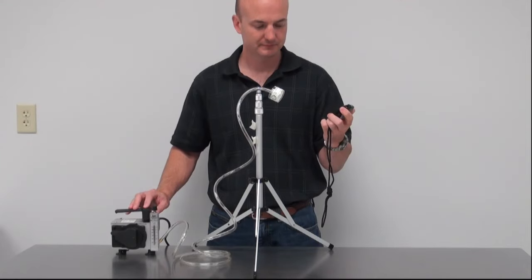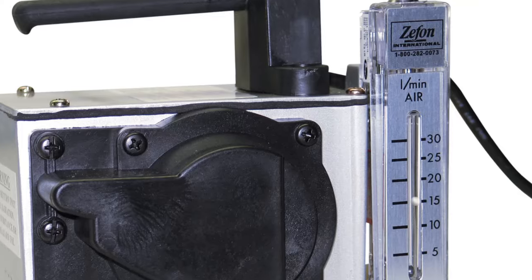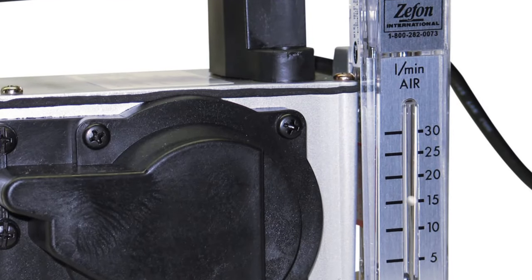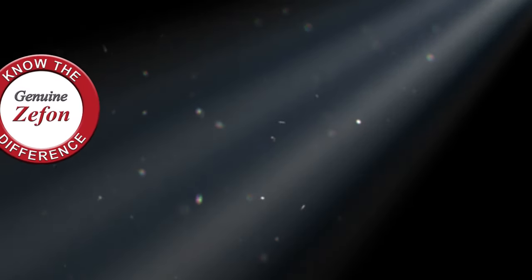The AeroCell air sampling cassette can be used in any orientation. It is designed to operate at a recommended flow rate of 15 liters per minute. All bioaerosol samplers are not created equal and will not provide the same results.